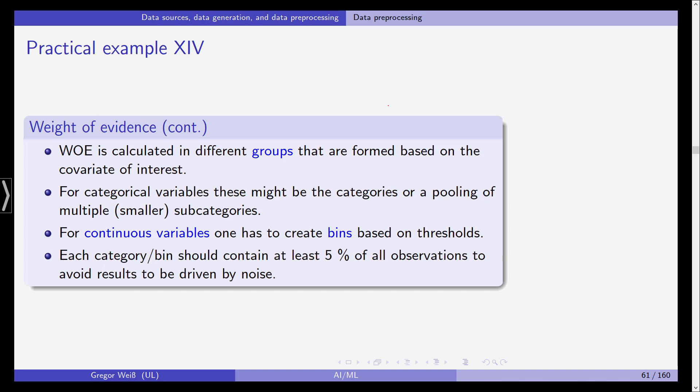Now the weight of evidence is calculated in different groups, in different subsamples that are formed based on the covariate of interest. So for example if we had gender as our covariate this would be very simple because gender will probably come in two or three, maybe four levels and if we only were to use male-female then we only would have two groups, two subsamples. Both subsamples would probably be of equal size.